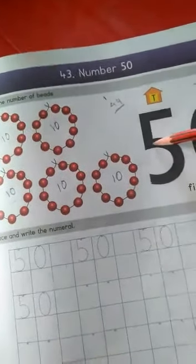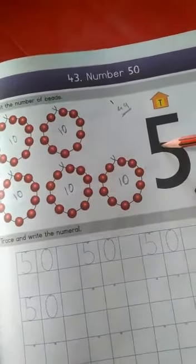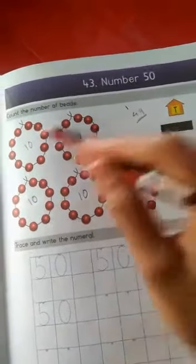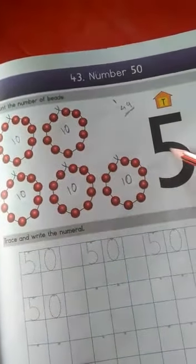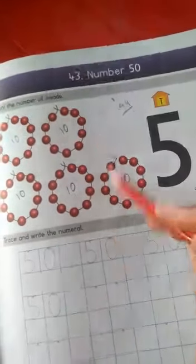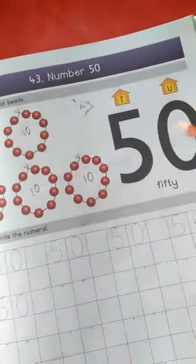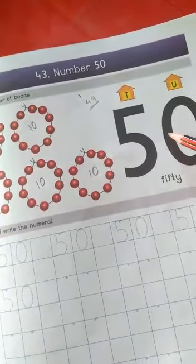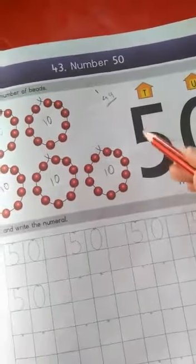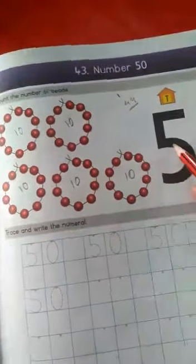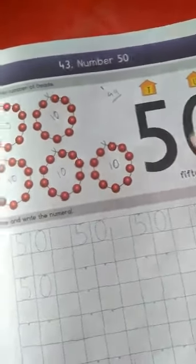in ten's place, write five. Means five sets of ten beads. There are five sets of ten beads. So, in units place, write zero. One units place zero. And ten's place five. This number is five, zero, fifty. Very good.